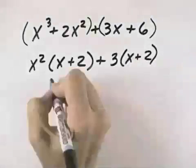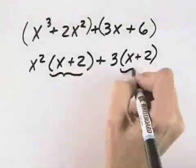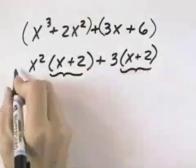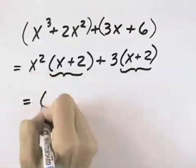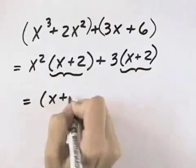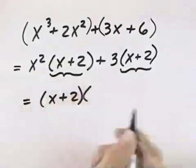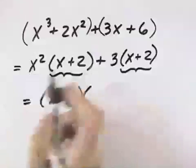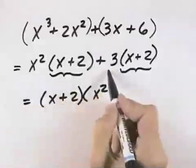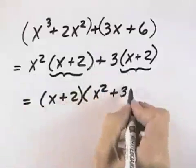Now I can immediately see grouping is going to work, because I can see that I do have the common factor of x plus 2. So that means I can divide out the x plus 2 as the greatest common factor. When I do that, with this first term, it leaves me the x squared, and with this second term, it leaves me the plus 3.